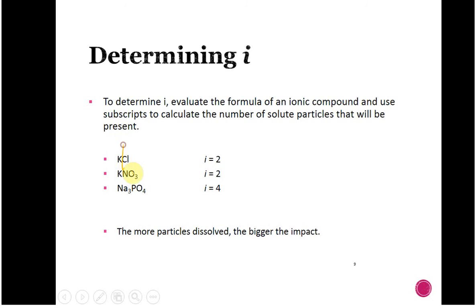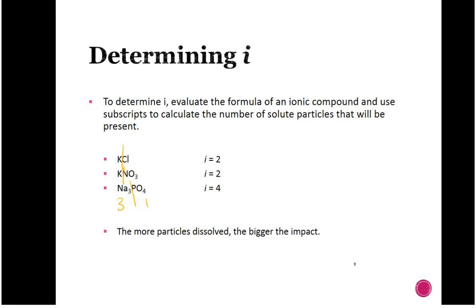For KCl: K⁺ + Cl⁻, i = 2. Potassium nitrate: K⁺ + NO₃⁻, i = 2. Sodium phosphate (Na₃PO₄): three sodiums plus one phosphate, i = 4. The point is — because colligative properties only depend on amount, not identity, the more particles you have, the higher the van't Hoff factor, and the much bigger the impact.